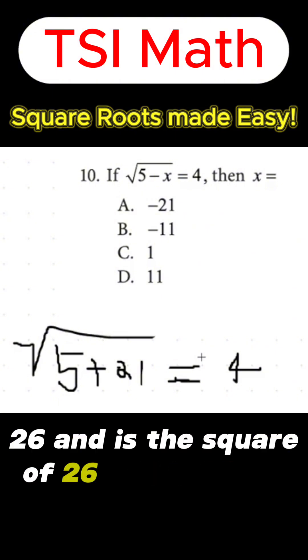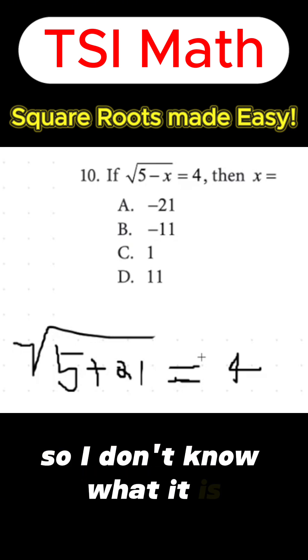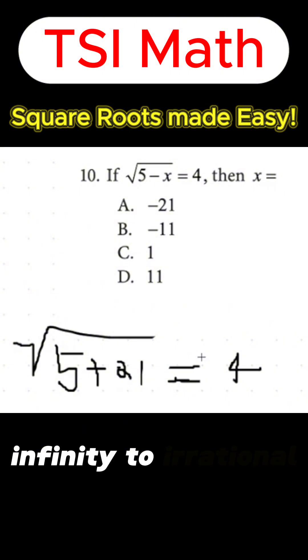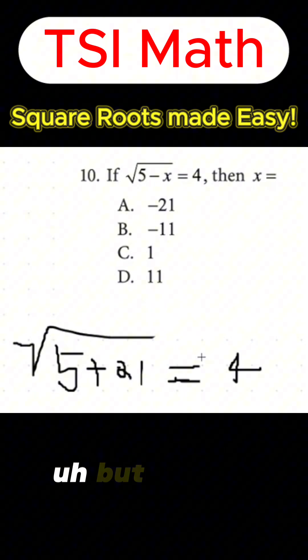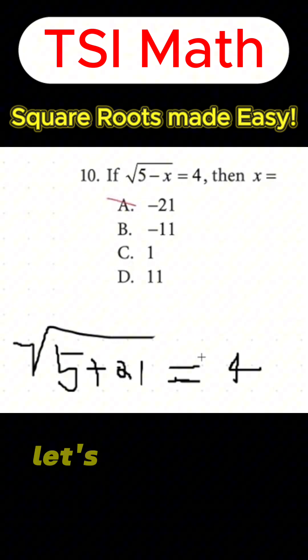26, and is the square root of 26 equal to 4? No. Nope, no way. It's some decimal that would go on for infinity. It's an irrational number. But it's not 4, so A's gone. Lovely. Let's try answer choice B.